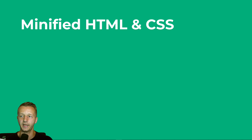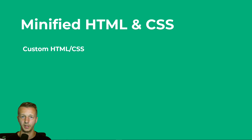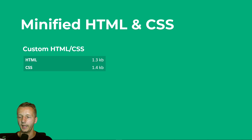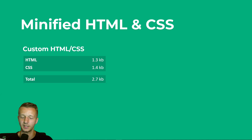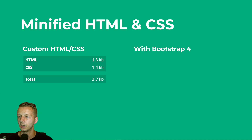Let's talk about the minified HTML and CSS for both versions. First, we'll cover the custom HTML and CSS I wrote without the help of Bootstrap or any other framework — just a straight-up HTML file and a CSS or Sass file. The HTML for that demo came in at 1.3 kilobytes and the CSS at 1.4, totaling 2.7 kilobytes — a nice, low file size for fast loading.